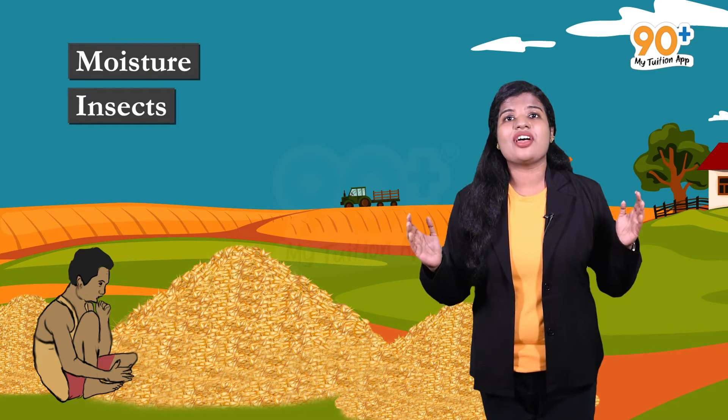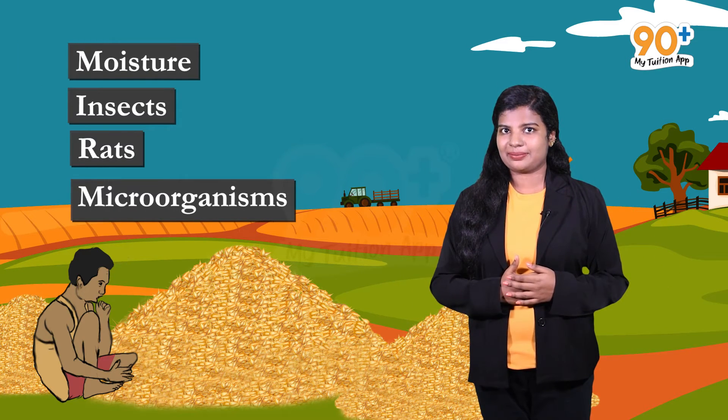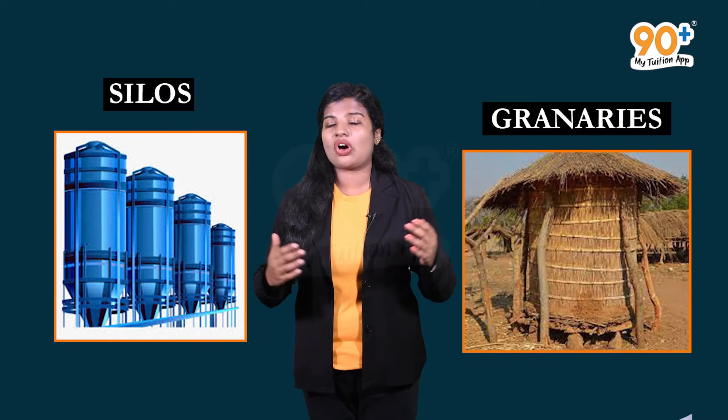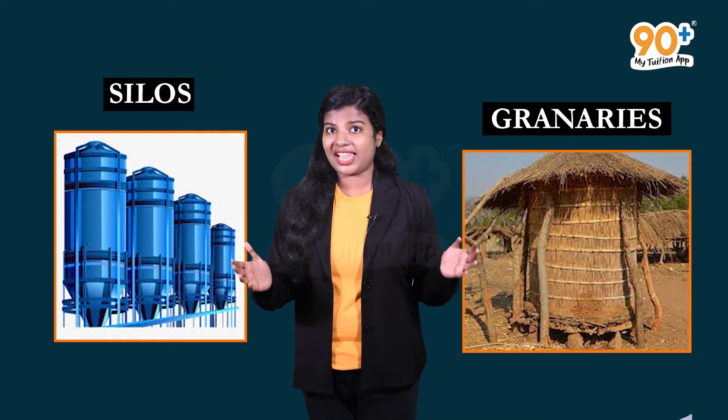Now our farmers have tons of grains and we need to protect them from moisture, insects, rats, and microorganisms. To protect them, the grains must be dried first. The dried grains are stored in jute bags or metallic bins in godowns. Large-scale storage of dried grains is done in silos or granaries.